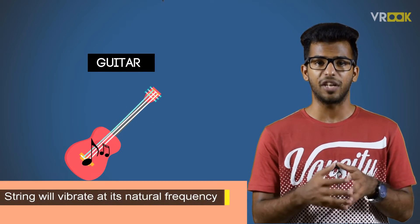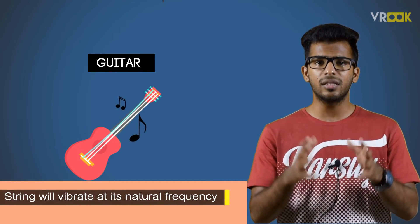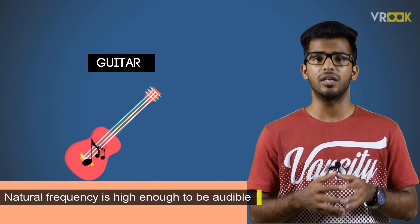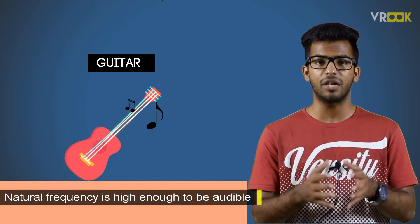Another example is a guitar. When a player strums a particular string, the string will vibrate at its natural frequency. Usually, this is denoted as a tone like E, F, or G. As the natural frequency is in the range of human hearing frequency, we can hear this beautiful sound.